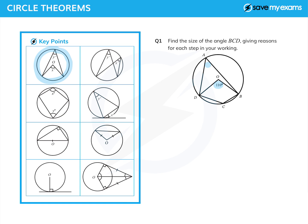Given 110° there, I can find BAD using this circle theorem. So the angle BAD — I'll put the hat on it to show it's an angle — is a half of the angle BOD. I need to give a reason, and the reason is: angle at centre is twice the angle at the circumference. So BAD is a half of 110°, which is 55°.